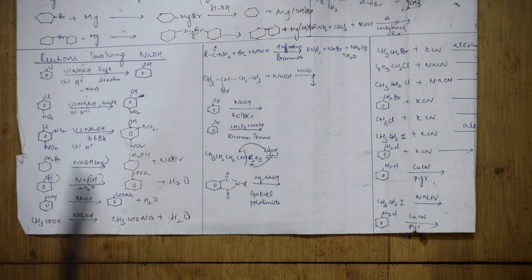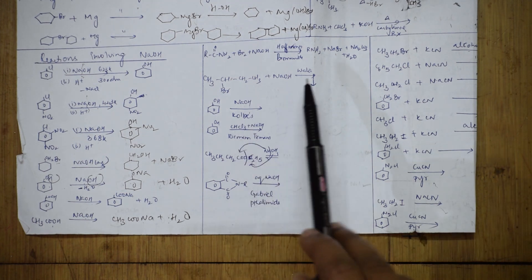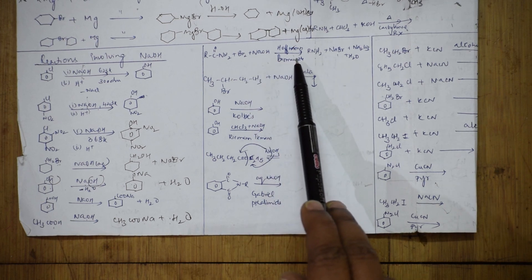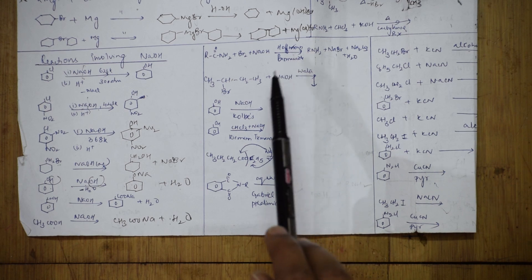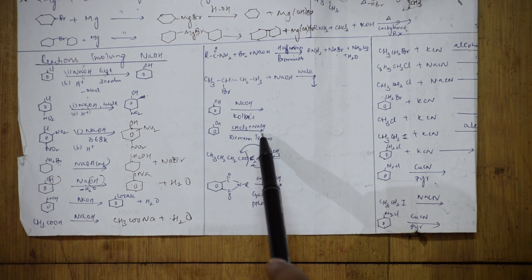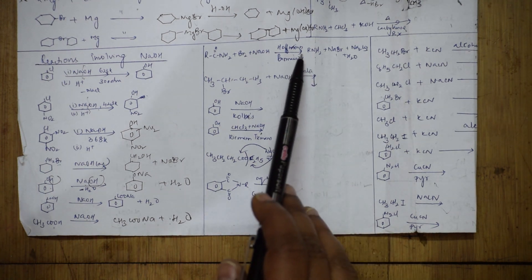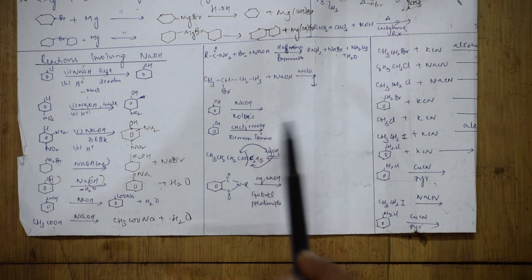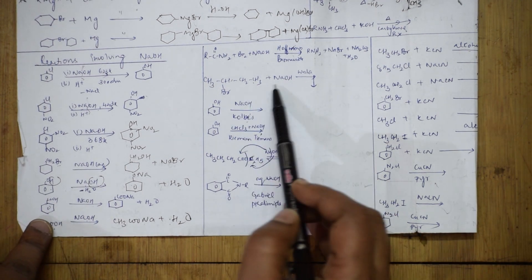All these reactions from different chapters are organized under one table. There are many name reactions involving sodium hydroxide: with bromine it's Hoffman's bromamide reaction; another gives Kolbe's reaction; another gives Reimer-Tiemann reaction; and one more gives Gabriel phthalimide synthesis. I've already done videos for Hoffman's, Kolbe's, Reimer-Tiemann, and Gabriel phthalimide — please watch those.